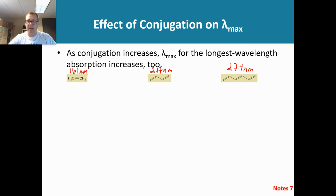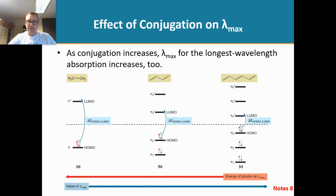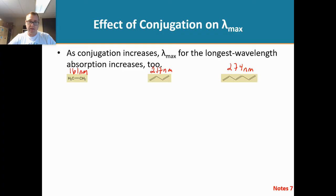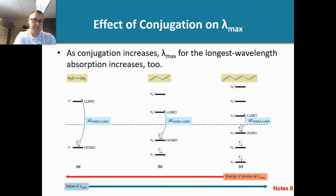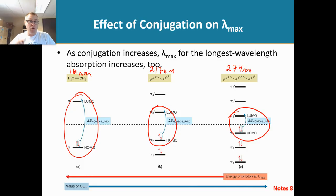And the answer to that question is quite simple. The simple answer, the reason why you have a higher lambda max is because, look at the homo-lumo gap. As you increase the amount of conjugation, do you see how the homo-lumo gap gets smaller and smaller and smaller? So that's the reason why.